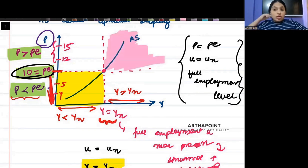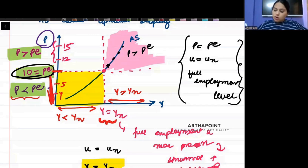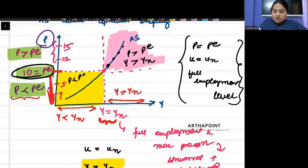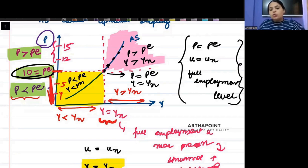So in these points of AS, P is greater than PE. When price is more than the expected price, output is more than YN. When price is less than expected, output is less than YN. And this is the point when price is exactly expectation, the output is YN. It is equal to YN. Y is equal to YN.